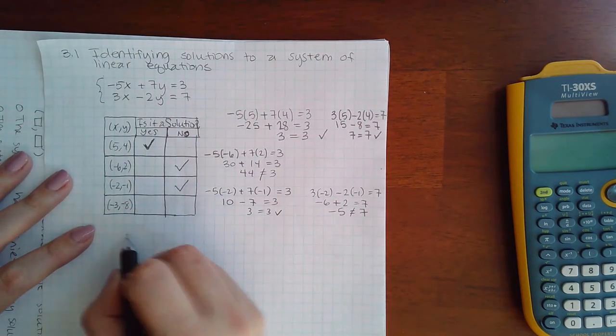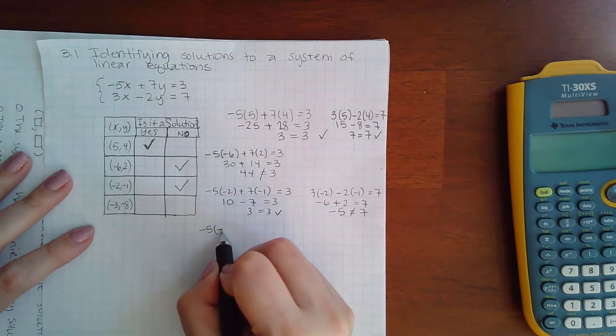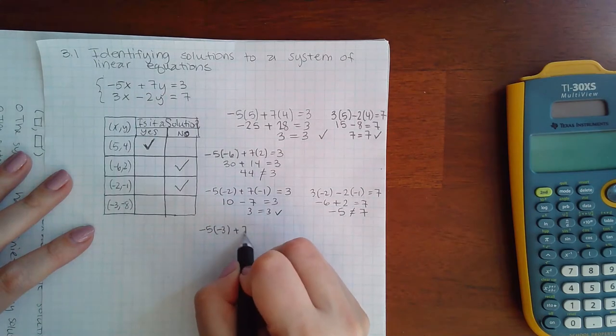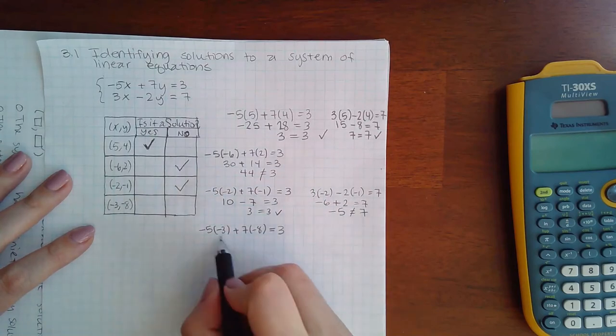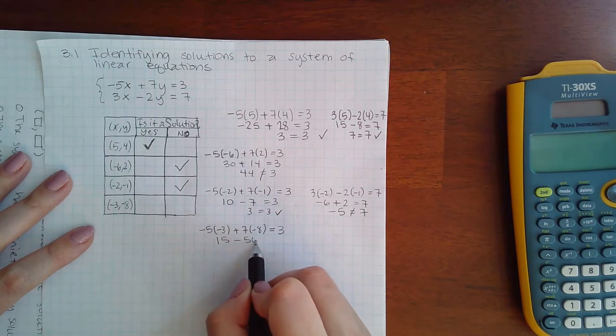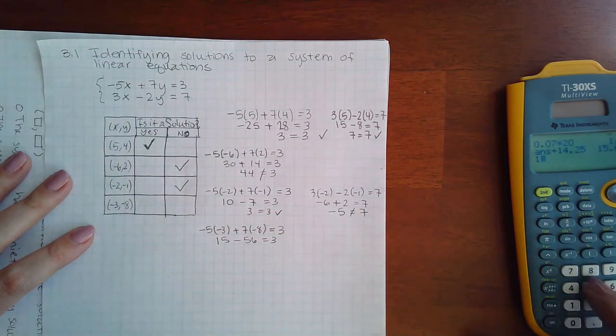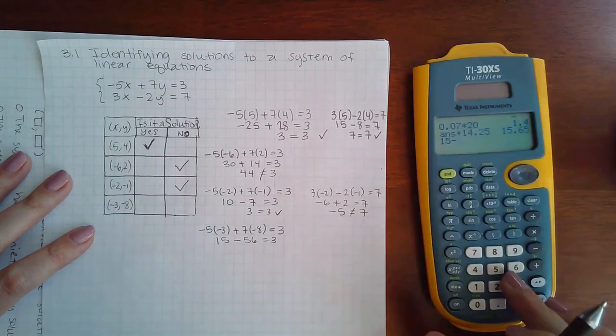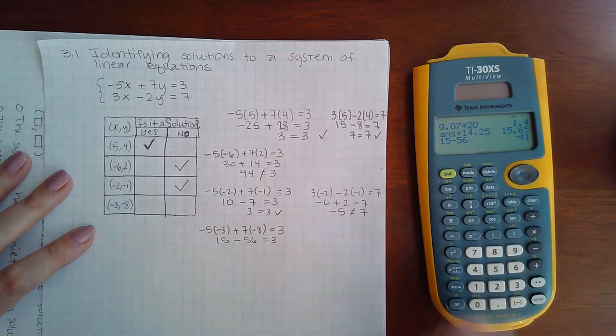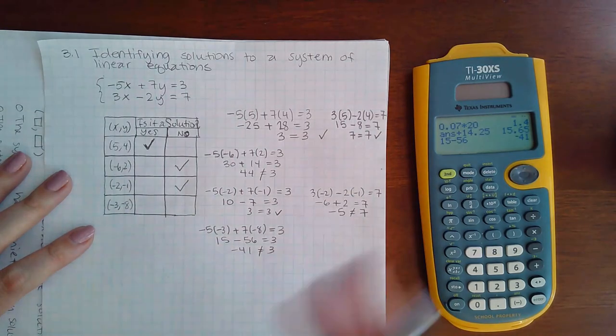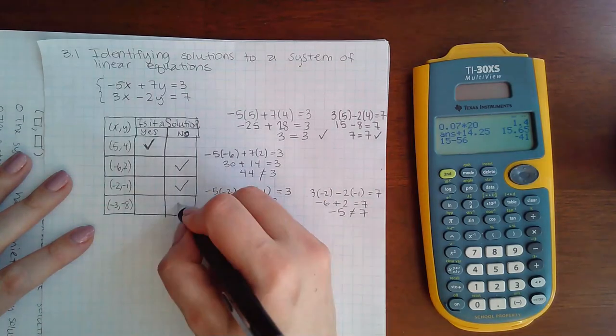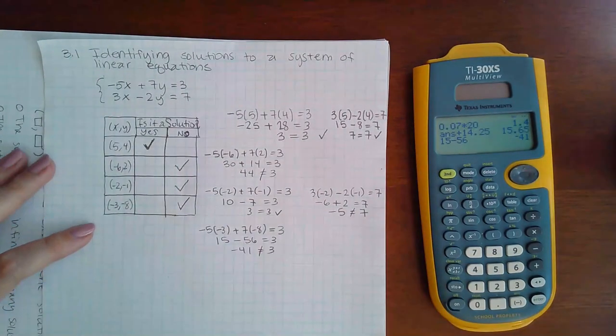Now we're going to try the last one. Negative 5 times negative 3 plus 7 times negative 8 equals 3. I get 15 minus 56, which is negative 41, which is definitely not 3. So again, there's no need to try it in the other one. The answer is no.